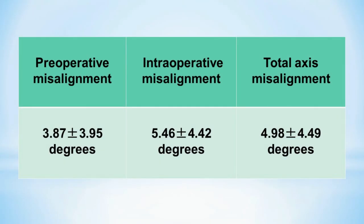This is the result of the three values: preoperative misalignment was 4 degrees on average, intraoperative misalignment was 5.5 degrees, and total axis was 5 degrees. We found a 4 to 5 degree difference, but in the total axis misalignment, a 10-degree or greater misalignment was found in 20% of the cases.